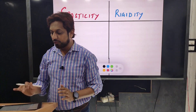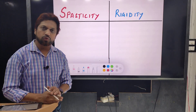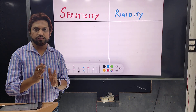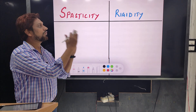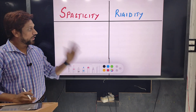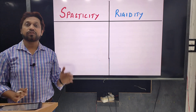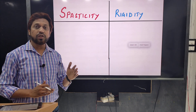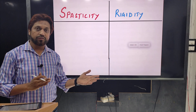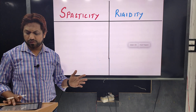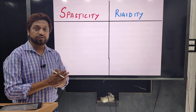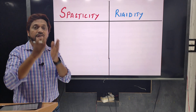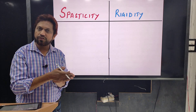Hello friends, welcome back to our YouTube channel Dr's Corner. In today's lecture, we will discuss what is spasticity, what is rigidity, and what are the differences between spasticity and rigidity. This is a very important topic in physiology, internal medicine, general medicine, and neurology. This topic is clinically very important to differentiate between spasticity and rigidity, which ultimately relates to different pathways in the central nervous system.